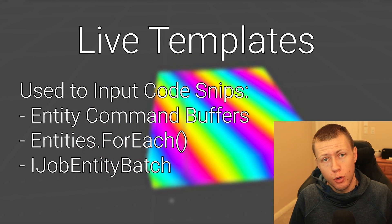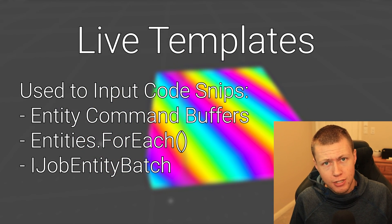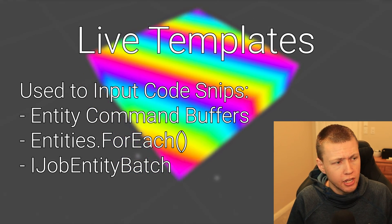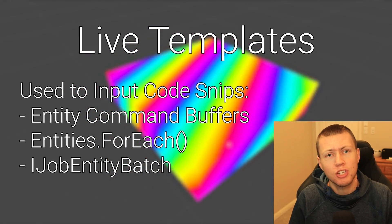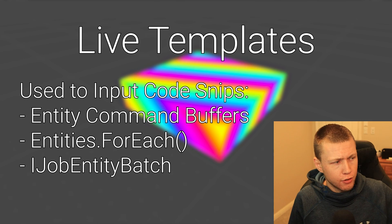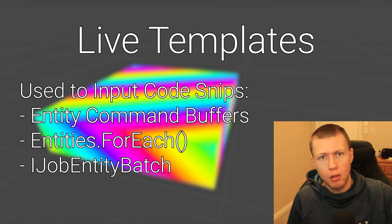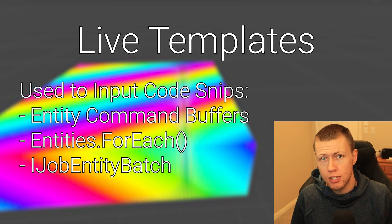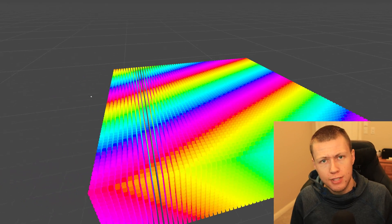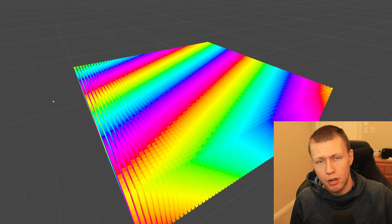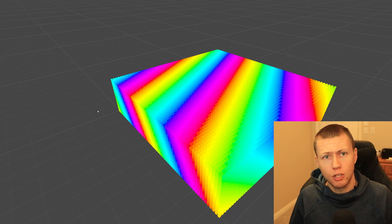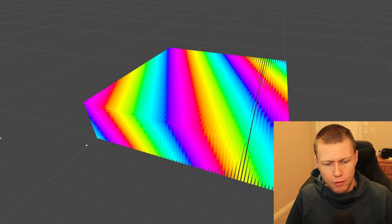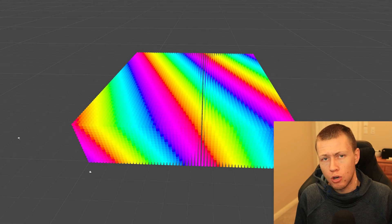The other type of templates I use are live templates. These are for when we already have a class file generated and we're writing code. We can type out a little shortcut and it enters a block of code pre-populated with some values. The great thing about both file and live templates is they're not static blocks of code — they're dynamic, configurable on the fly, and fit within our existing codebase.